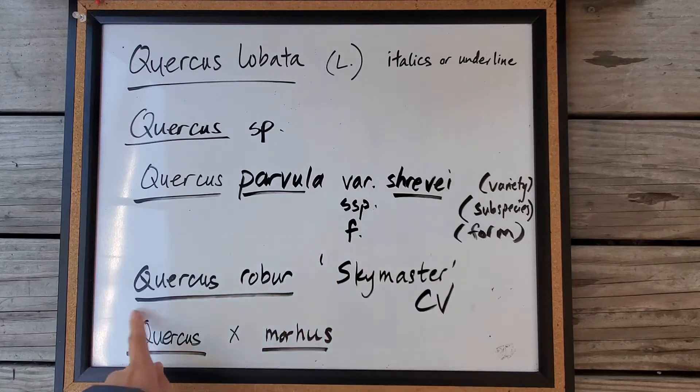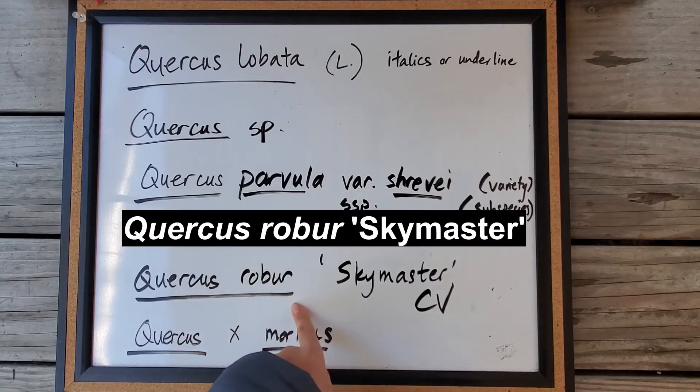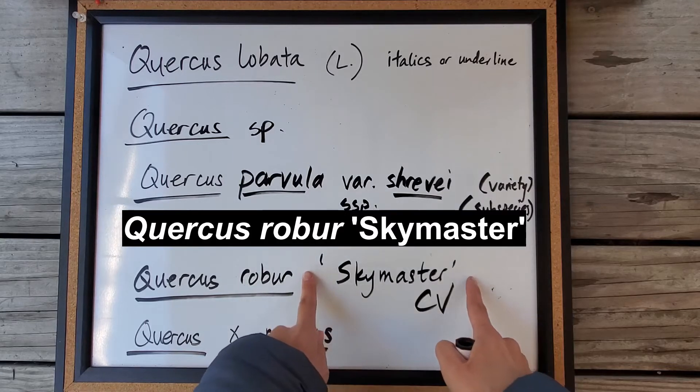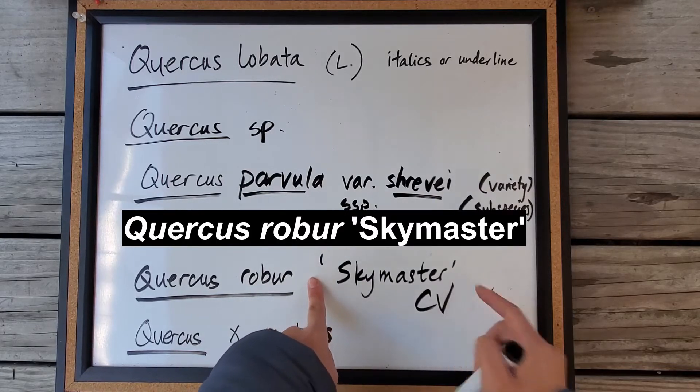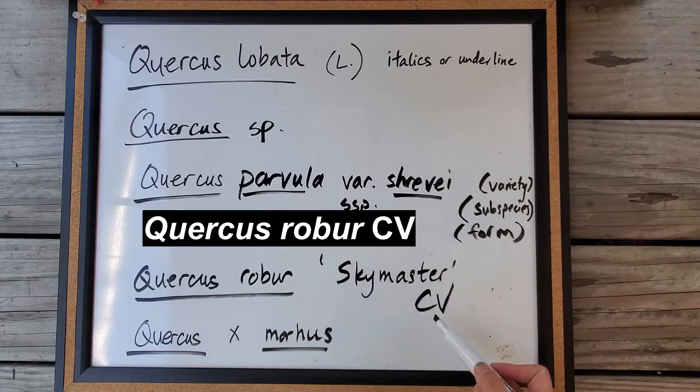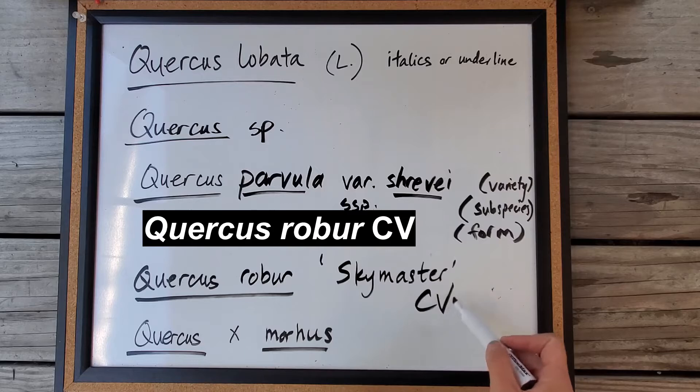If you have a cultivar, you'll have the species name italicized or underlined, and then you put the cultivar name in single quotations. If you don't know what cultivar it is, then you can just write cv, both of them capital letters.